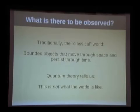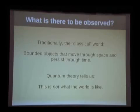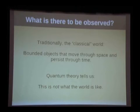The question is: what is to be observed? There's a very traditional answer — the classical world. The classical world can be characterized as bounded objects that move through space and persist through time. I'm a bounded object moving through space, and if you close your eyes and open them again, I'm still here — I persist through time. That's the classical world: stuff moving that you can keep track of. And quantum theory tells us the world is not like that. It's been telling us for over 80 years.